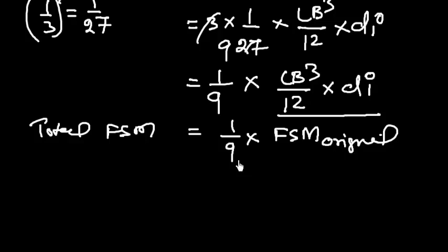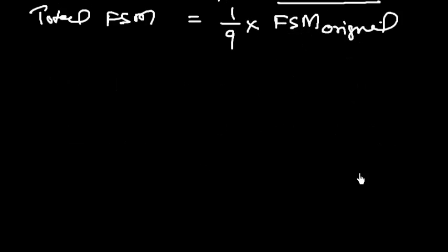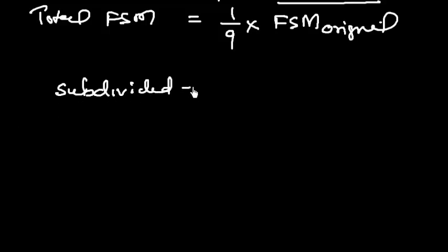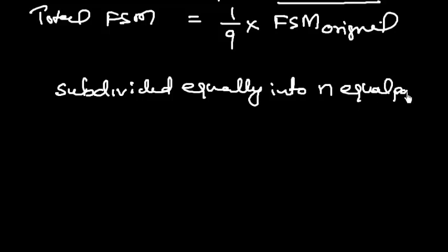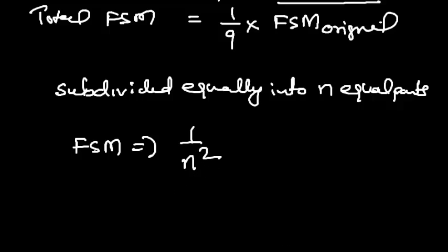This gives us a very interesting general relationship: if a tank is subdivided into N equal parts, the free surface moment will reduce by a factor of 1/N². This is the reason why double-bottom (DB) tanks are divided into port, starboard, and center compartments, and why there are further subdivisions within DB tanks.